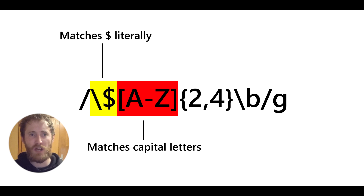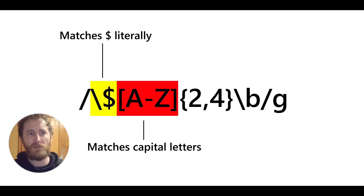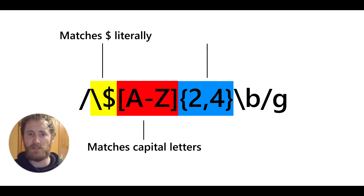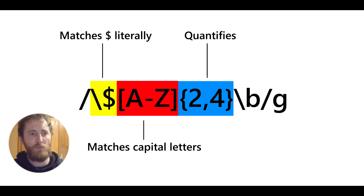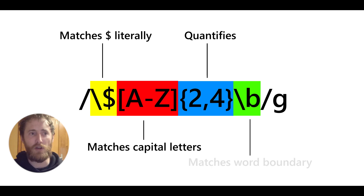Then we have the next section where in square brackets we have A to Z, both capitals, which tells the pattern we want to match any uppercase letter — uppercase letters only between A and Z. We want to do this two to four times, which is where the next bit comes in: curly braces containing two comma four, because we want to match two to four uppercase letters. Finally we add backslash B in lowercase, which defines the end of a word, and that is the end of our regex match.